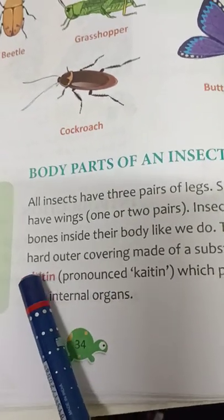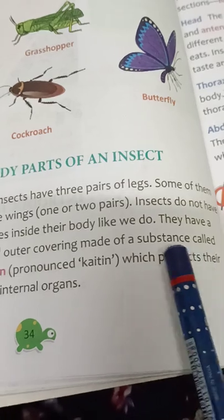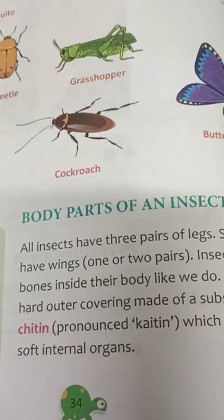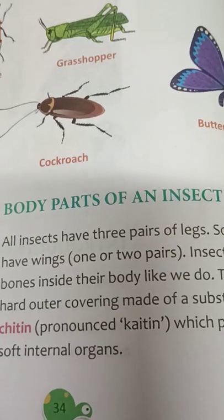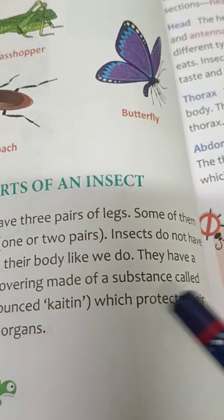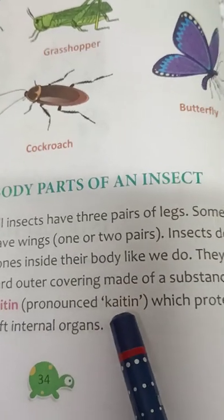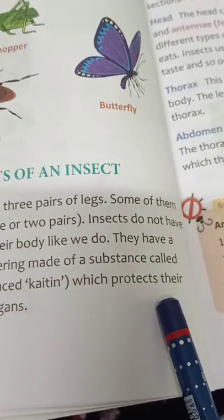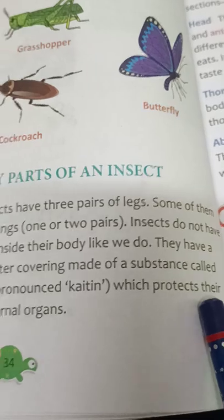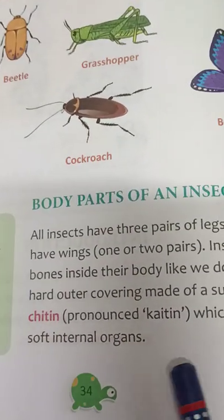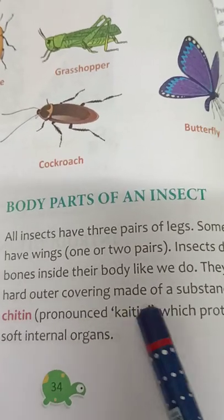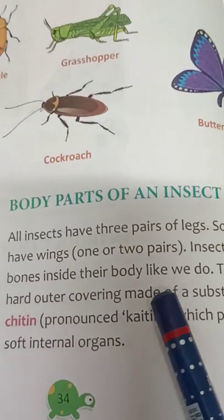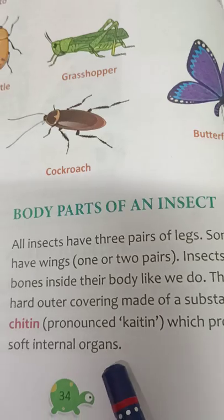Chitin is pronounced as 'chitin.' Insects don't have bones, but the outer covering of the insect is a little bit hard because it is made of a substance called chitin. The role of chitin is to protect their soft internal organs — the organs inside the body.